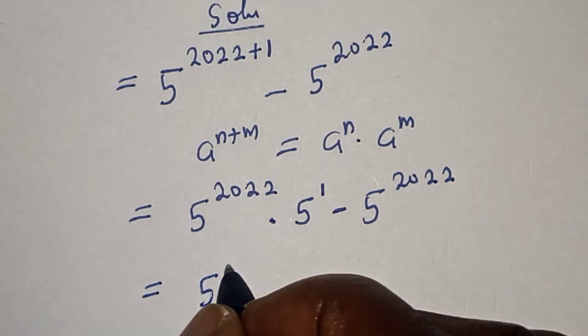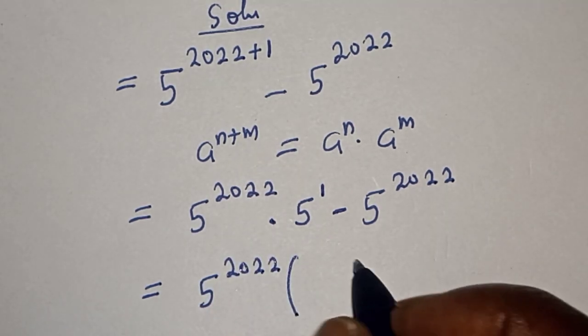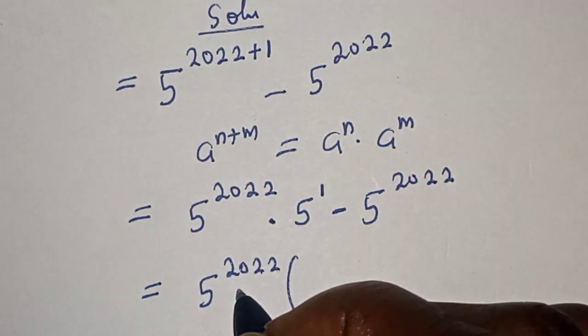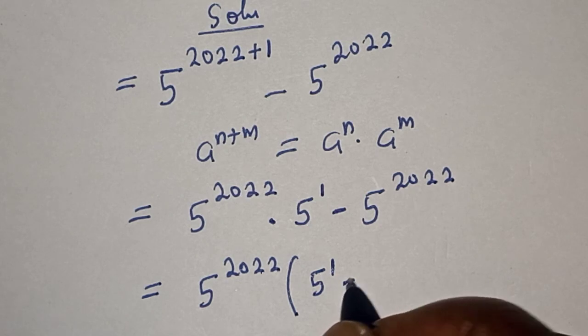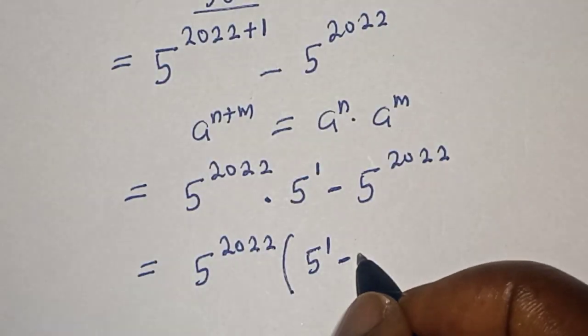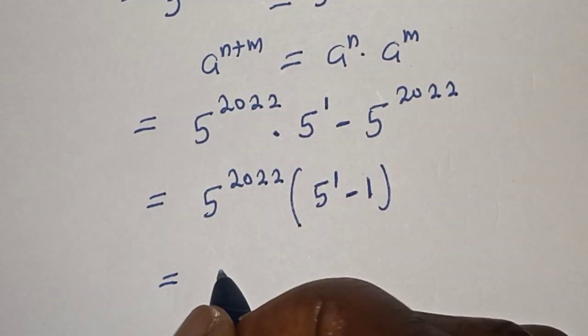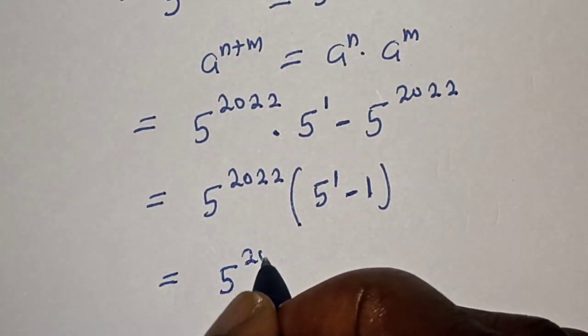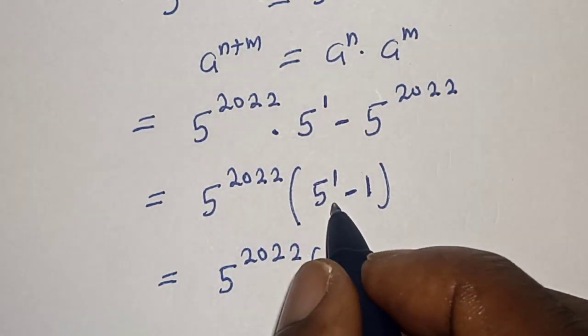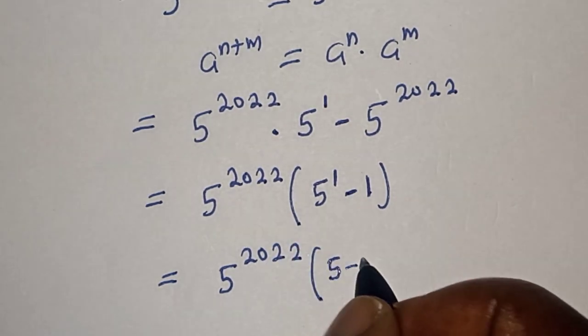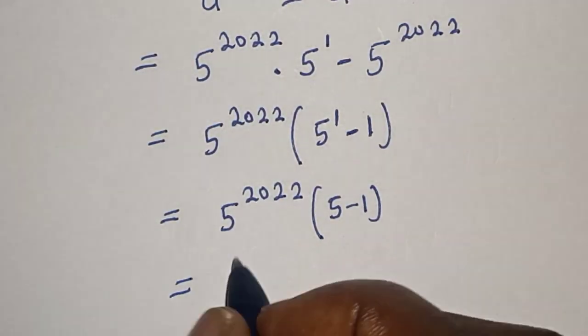5 raised to power 2022 times bracket: 5 raised to power 1 minus 1, close bracket. This is equal to 5 raised to power 2022 times bracket: 5 minus 1. Then this is equal to 5 raised to power 2022 times 4.